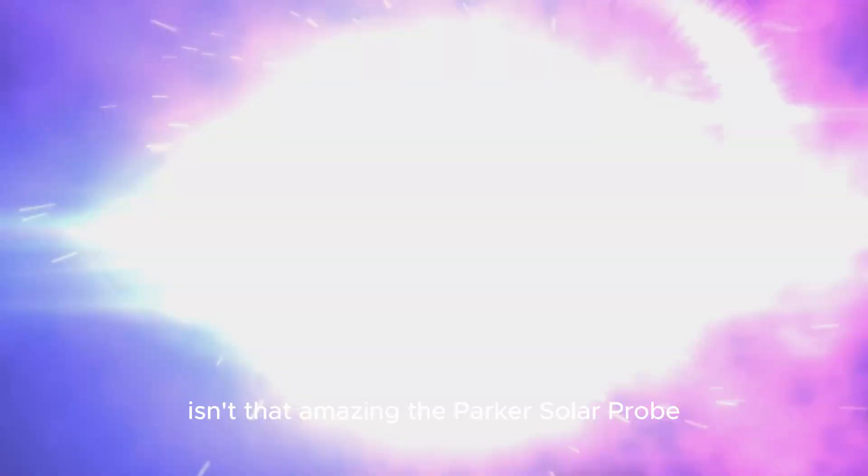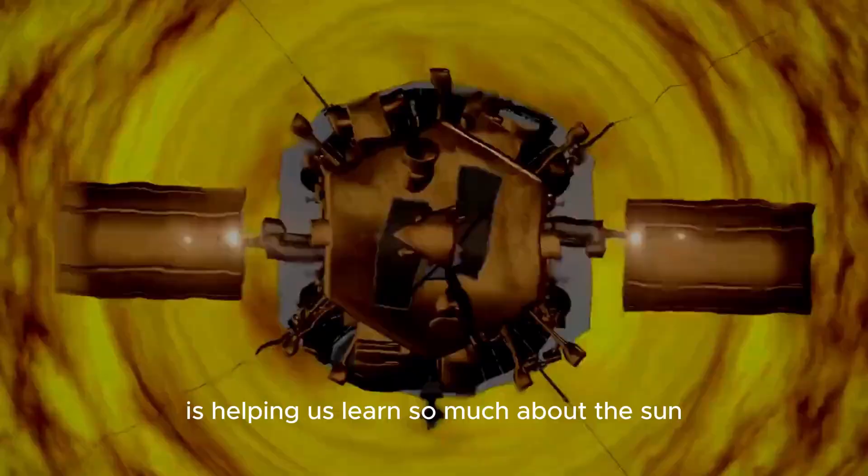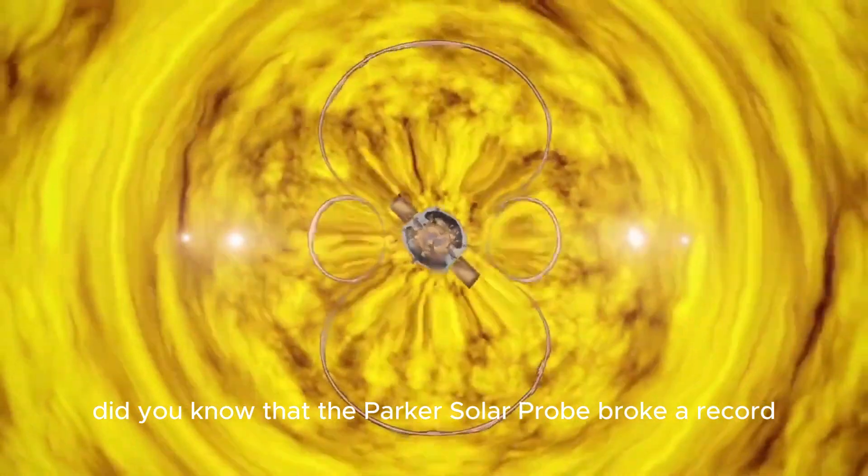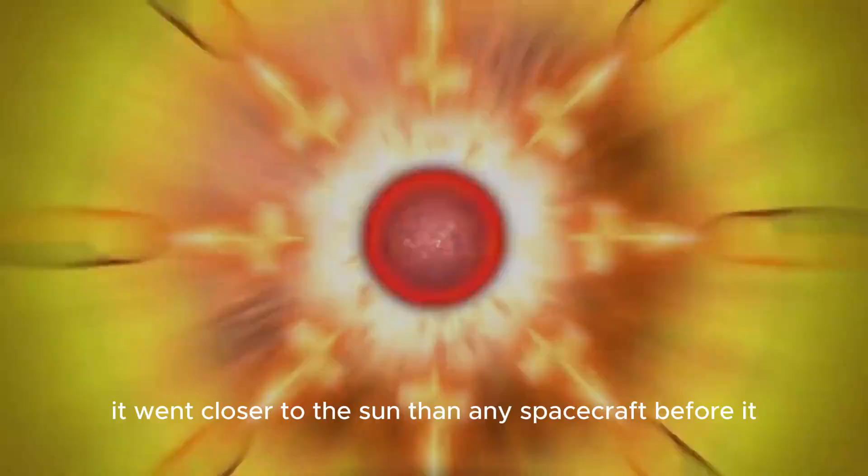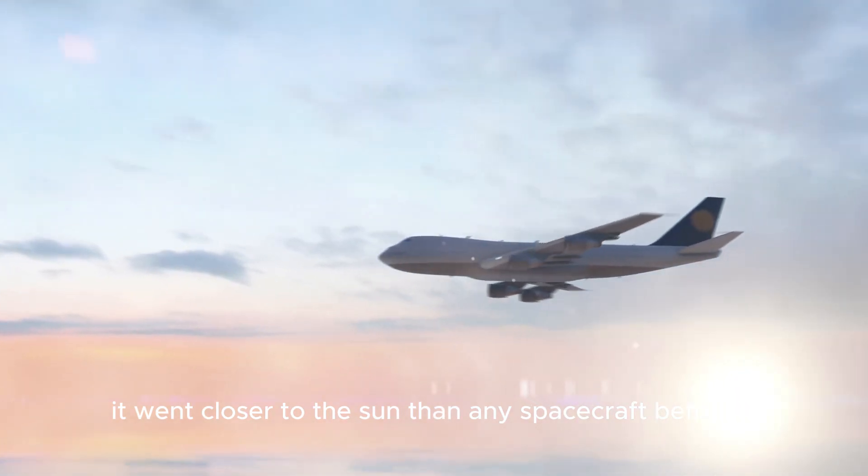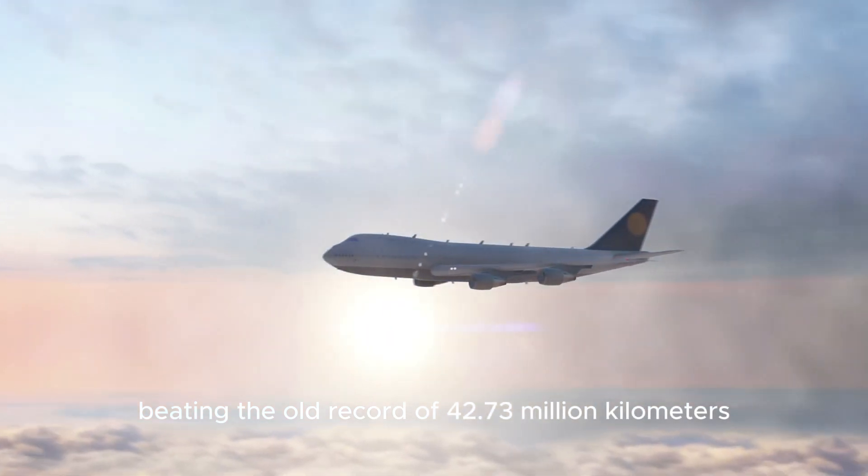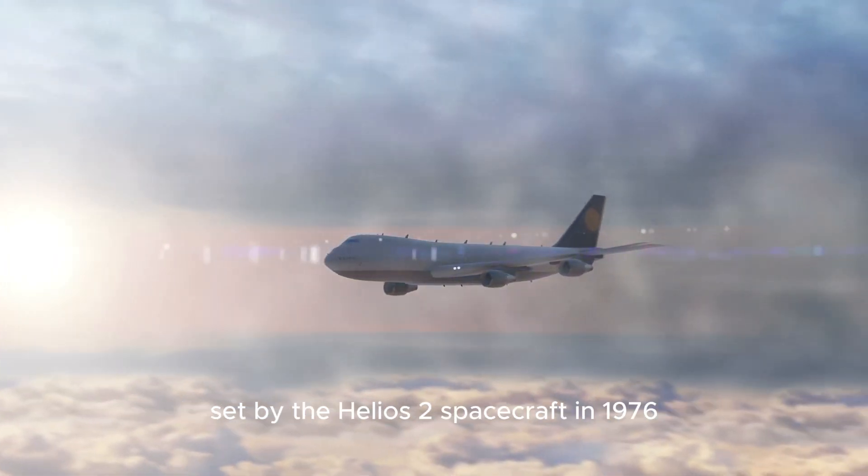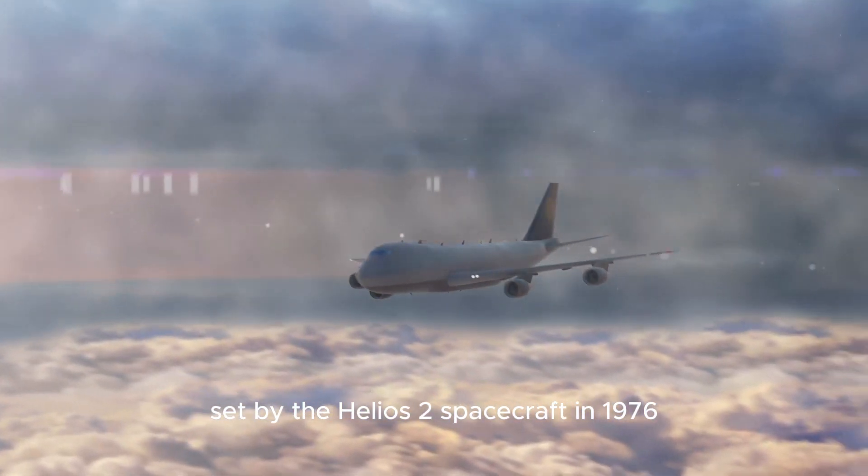The Parker Solar Probe is helping us learn so much about the sun. Did you know that the Parker Solar Probe broke a record? It went closer to the sun than any spacecraft before it, beating the old record of 42.73 million kilometers set by the Helios 2 spacecraft in 1976.